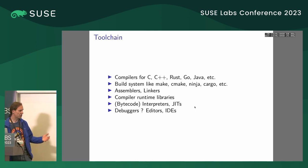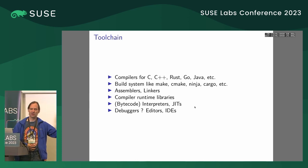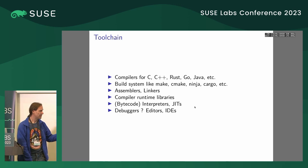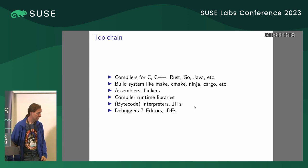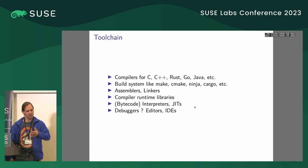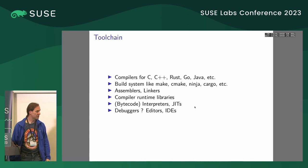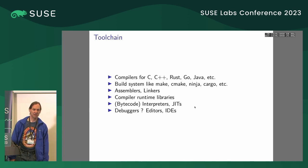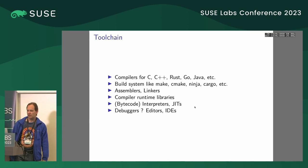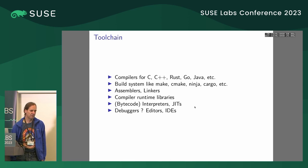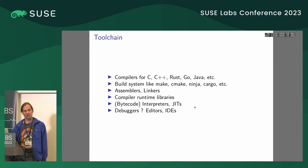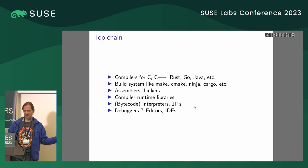There are also interpreted languages, like Python, Java bytecode, or other scripting languages, and sometimes just-in-time compilers. The toolchain, at least for the developer side, also includes things like debuggers and editors or IDEs. This is basically what the toolchain covers, and our team covers a very tiny bit of that.